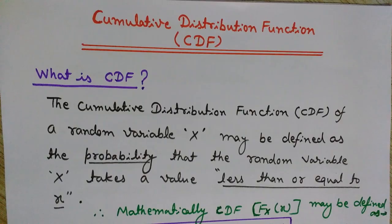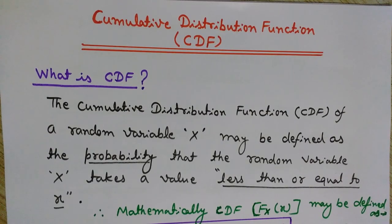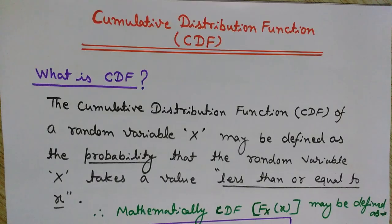But before knowing CDF, it is necessary to understand what is a sample space and random variable. A sample space is nothing but the range of all the possible outcomes of an experiment. While a random variable is a function which can take on any value from the sample space, having a range of some set of real numbers. We will understand it with the help of an example, in short.